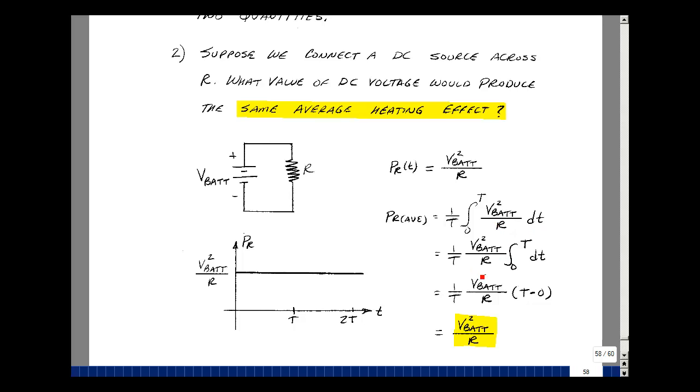Pull out the constant in front because this is not a function of time. I get the integral of 1 dt, evaluated from the upper limit minus the lower limit. That would be t minus 0, times the battery squared, divided by R, and then divided by t. The t's cancel, and we just get the battery voltage squared divided by R.